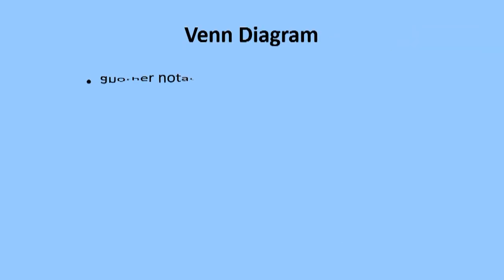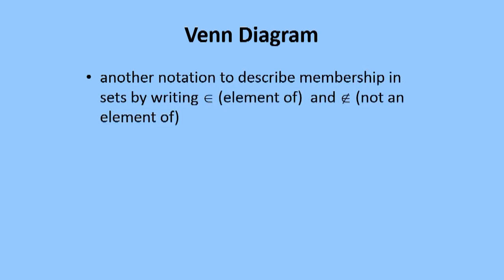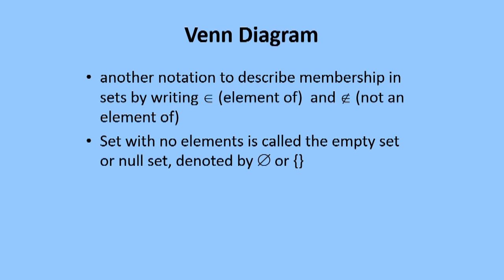Another notation to describe membership in sets is by writing element of, and not an element of. Set with no elements is called the empty set or null set denoted by these two symbols. Singleton set contains just one member.